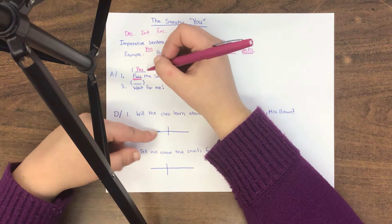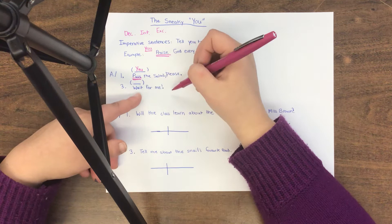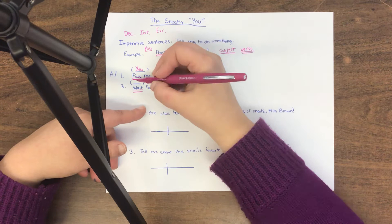What about number three? Wait for me. Well, the verb is wait. Who's waiting for me? Well, you are because that's who the sentence is asking.